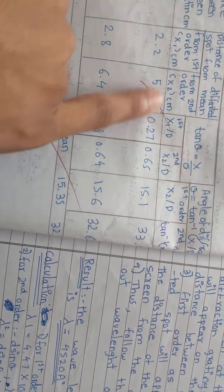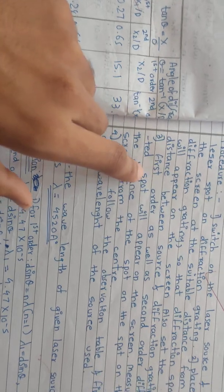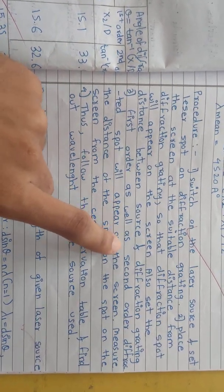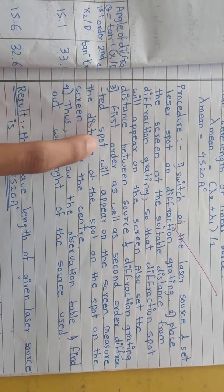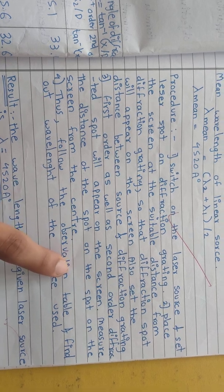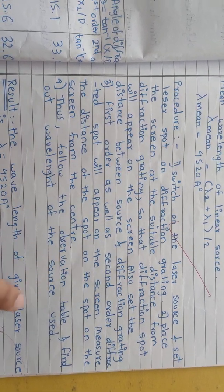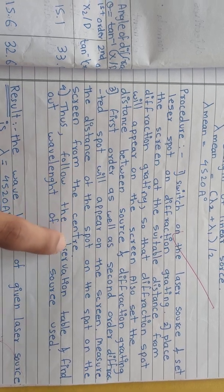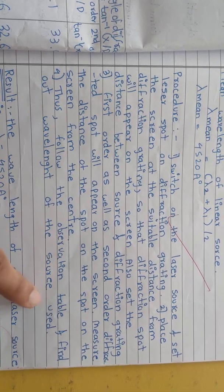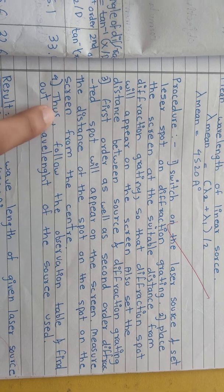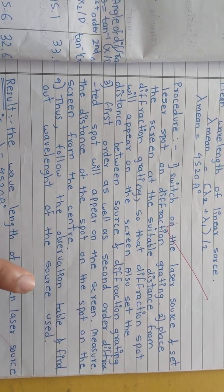First order as well as second order diffraction spots will appear on the screen. Measure the distance of the spots on the screen from the center. Thus follow the observation table and find out wavelength of the source used.